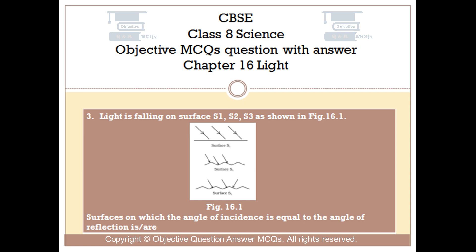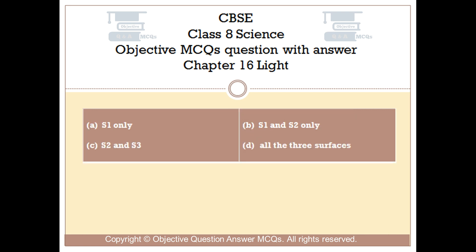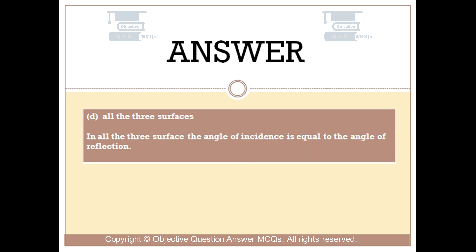Question number 3: Light is falling on surfaces S1, S2, and S3 as shown in figure 16.1. Which surfaces have the angle of incidence equal to the angle of reflection? Option A: S1 only. Option B: S1 and S2 only. Option C: S2 and S3. Option D: All three surfaces. The right answer is option D — all three surfaces. In all three surfaces, the angle of incidence is equal to the angle of reflection.